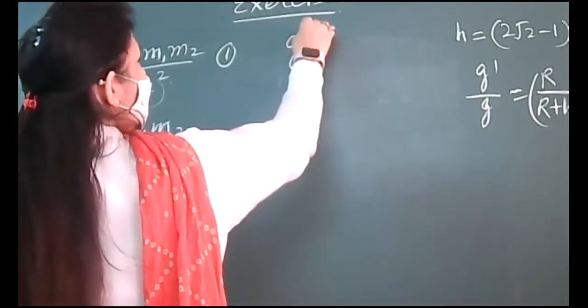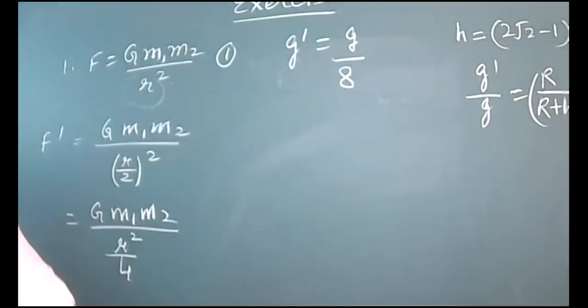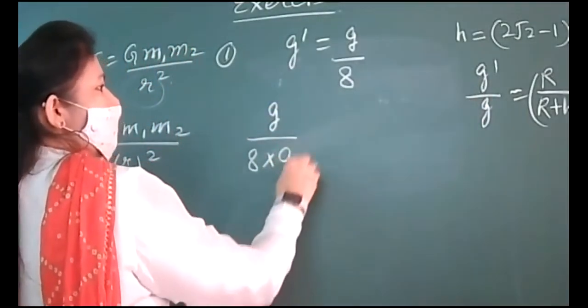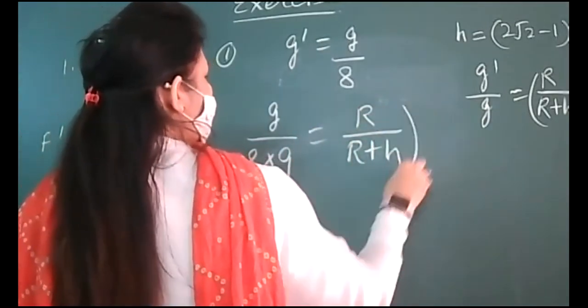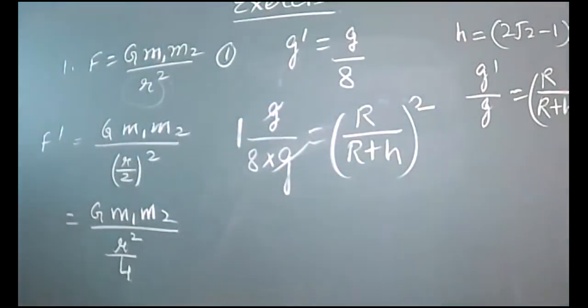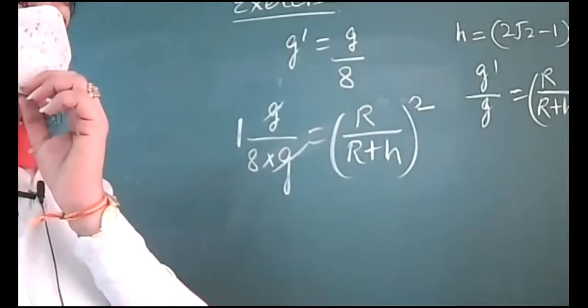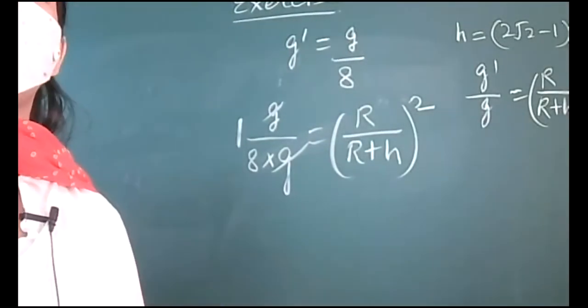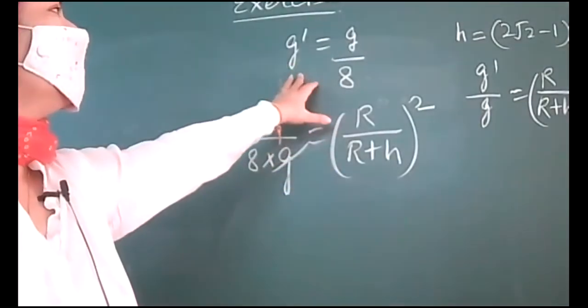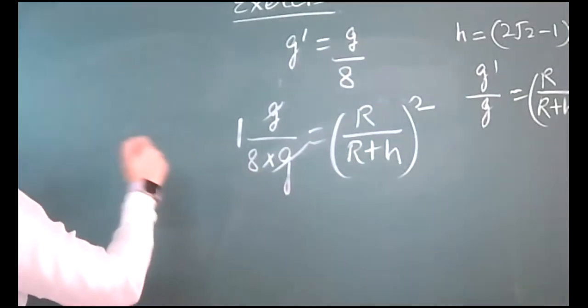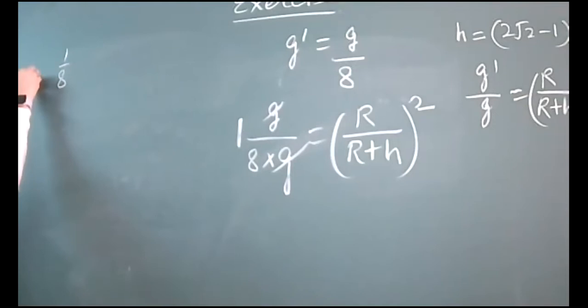What is the formula of g with height? G dash over G is R over R plus h square. We will be using that. According to the question, they are saying g reduces to 1 eighth of its value on the surface. So G dash is G by 8. Put this G dash here. G by 8 over G. G gets cancelled.